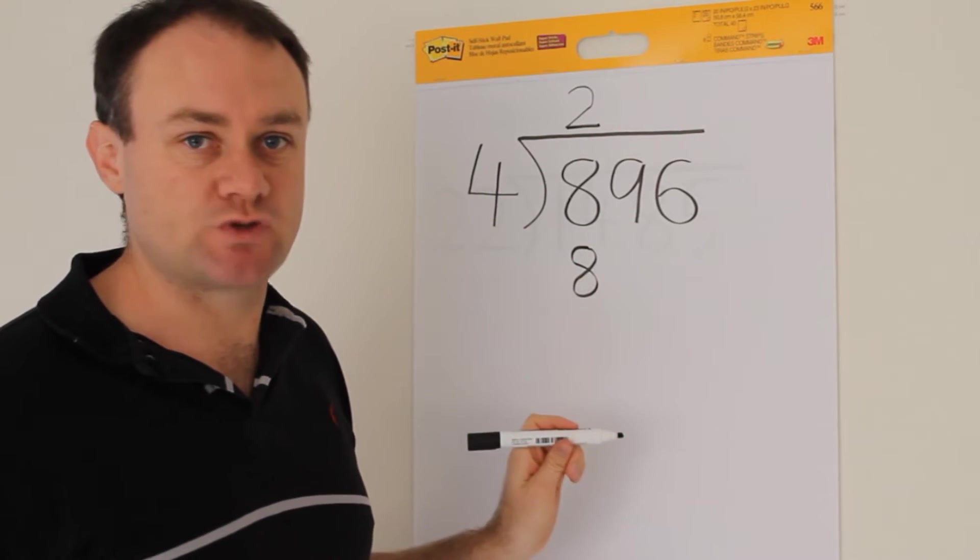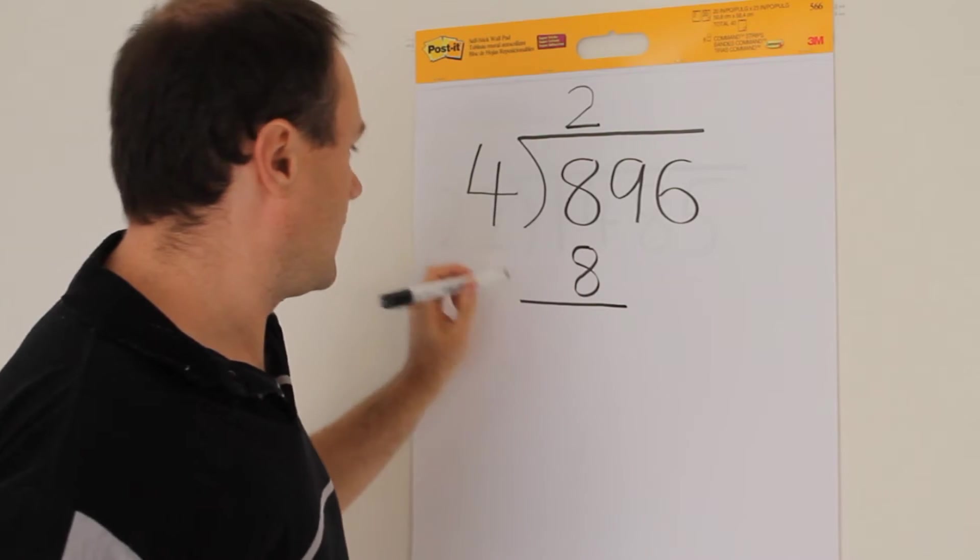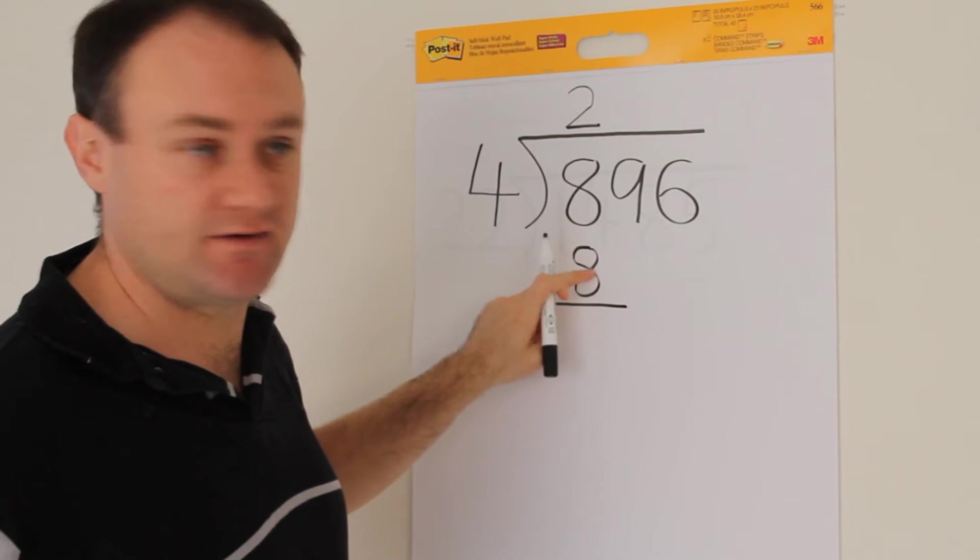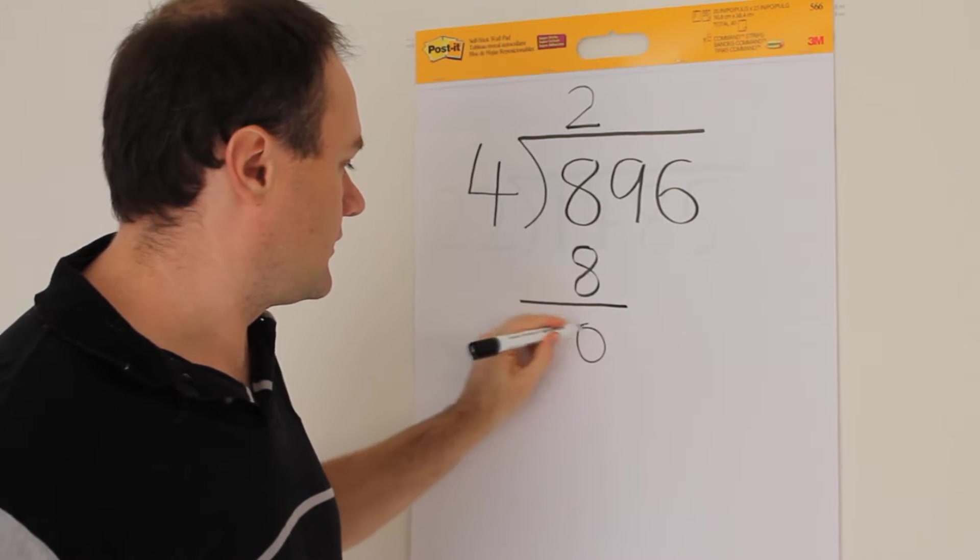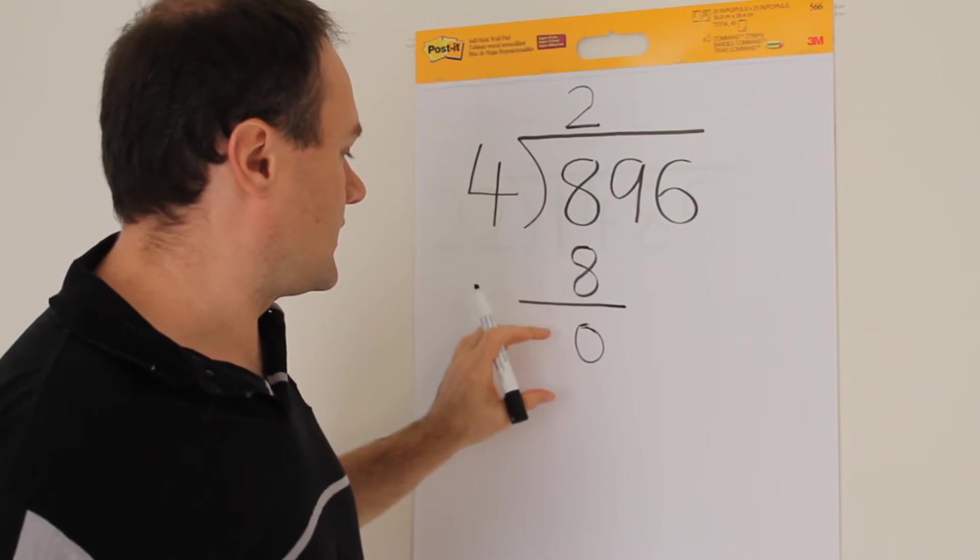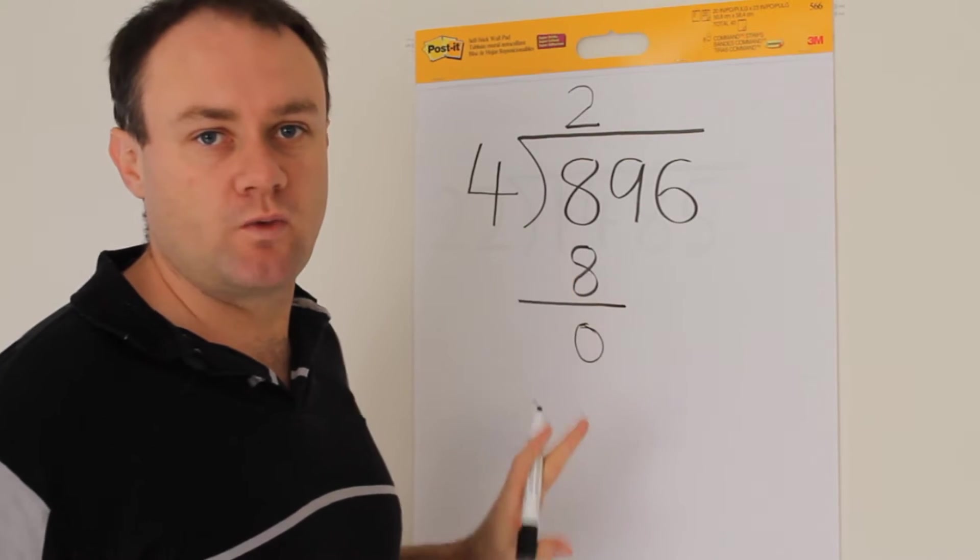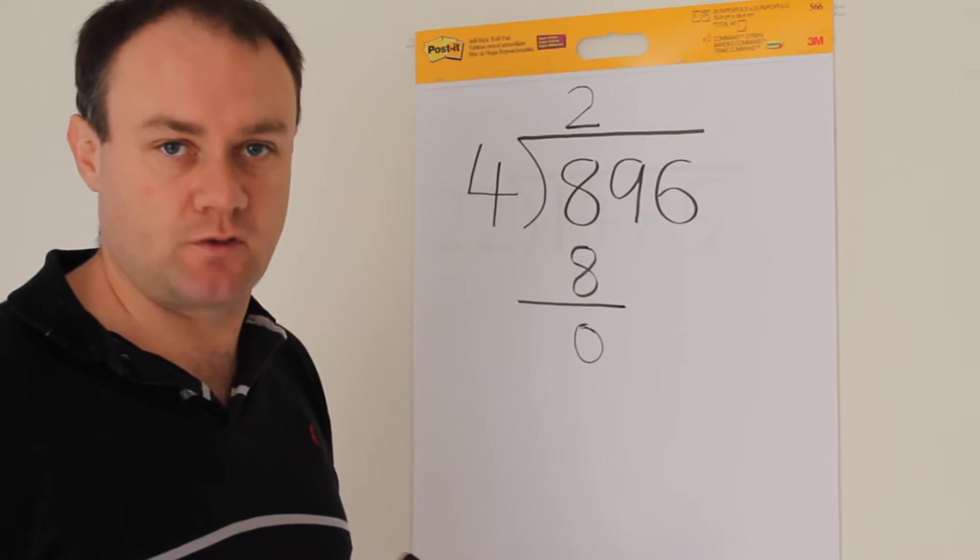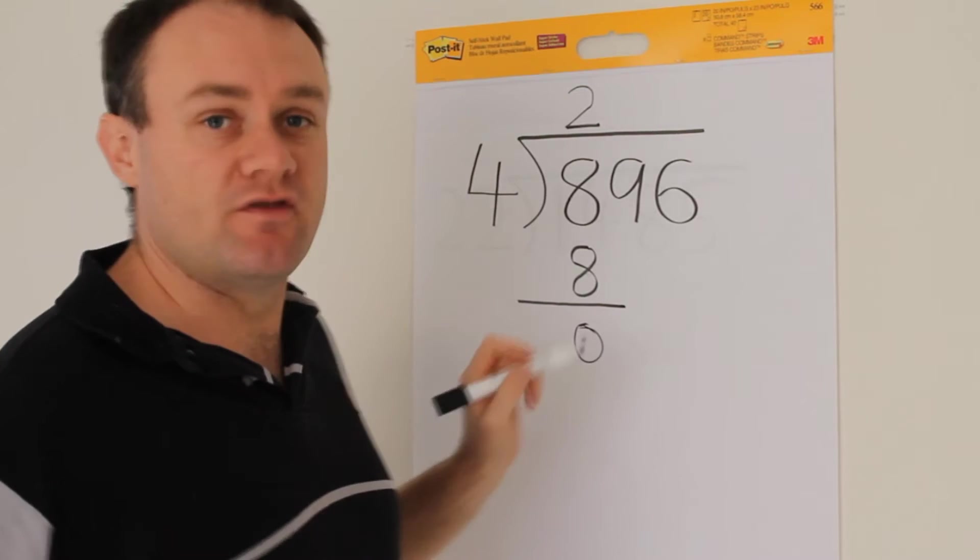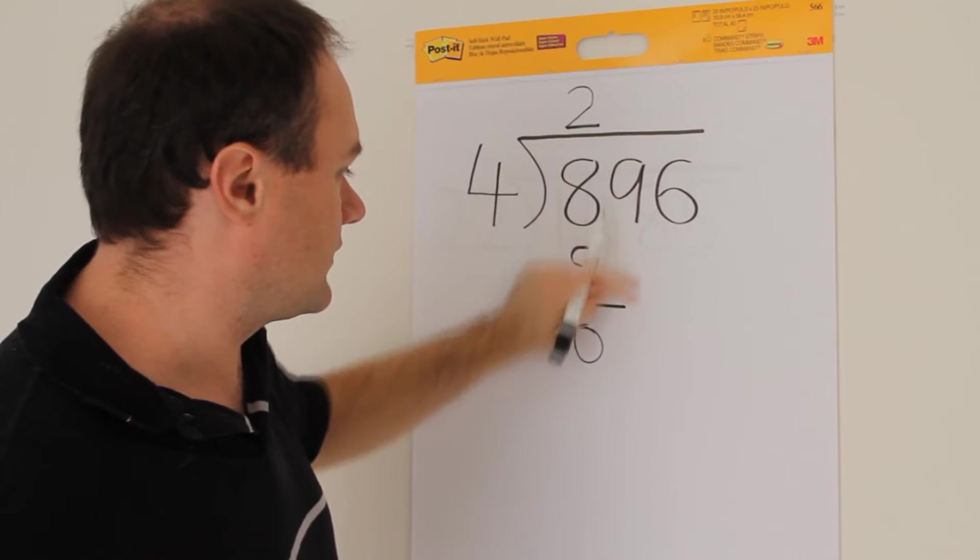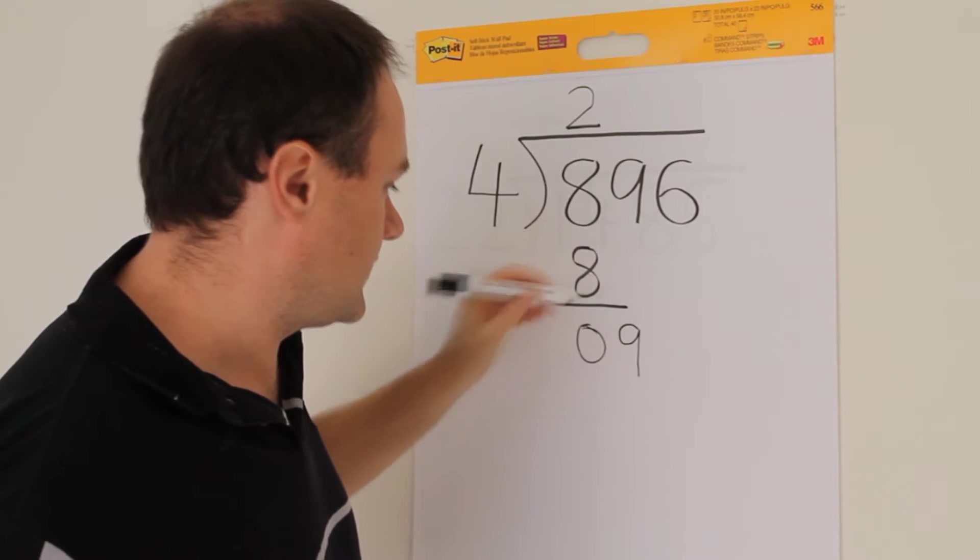Next comes subtraction. I say, what is 8 minus 8? That is 0. Next comes a comparison, which for this simple question we really don't need to worry about. I'll explain that more when I move on to a more difficult question. And then the final step is a bringing down step, and here we're going to bring this 9 down here.